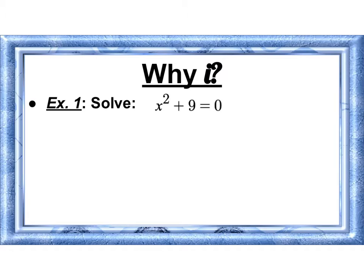So why do we need i? Well let's try to solve this. It's got an x squared so I'm going to subtract 9 from both sides, get the x squared by itself. I want to undo a something squared by taking the square root of both sides, remembering my plus or minus, and this is where we run into trouble with the square root of a negative.